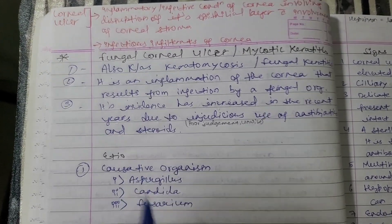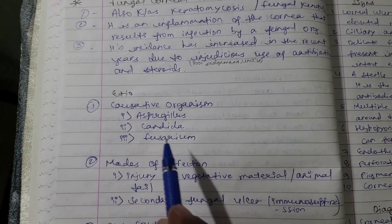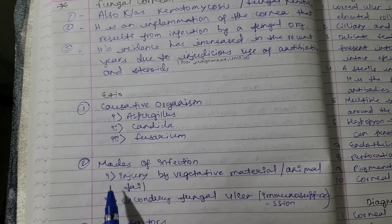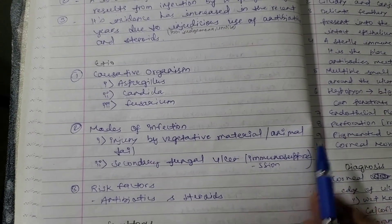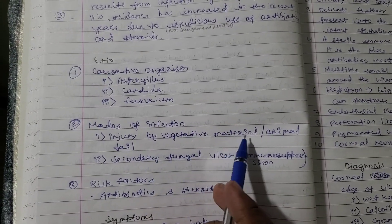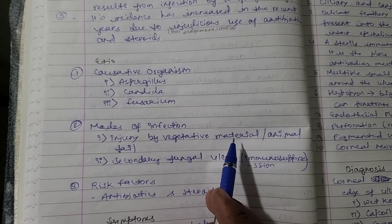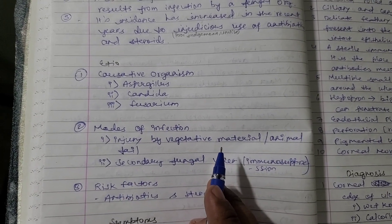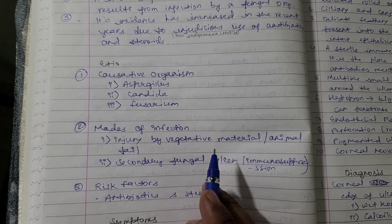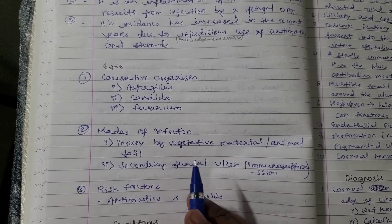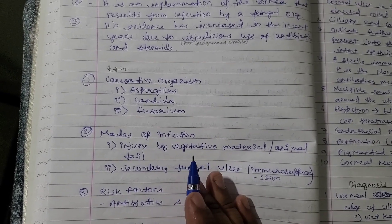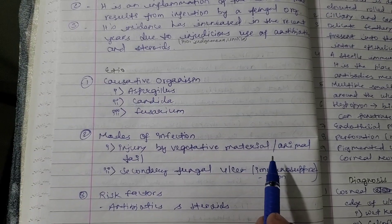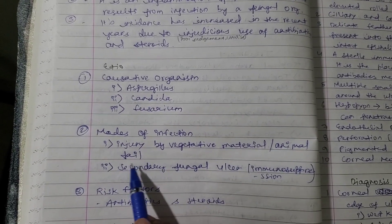The causative organisms are Aspergillus, Candida, and Fusarium. The mode of infection is injury by vegetative material — related to plant waste or organic waste such as wood, leaves, grass, or garden material — or animal tail hair falling into the eyes.